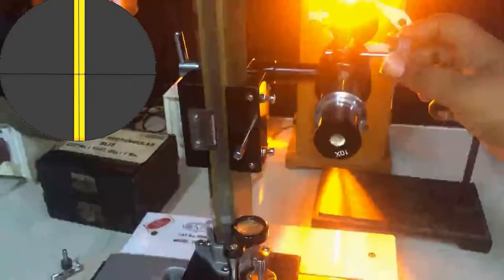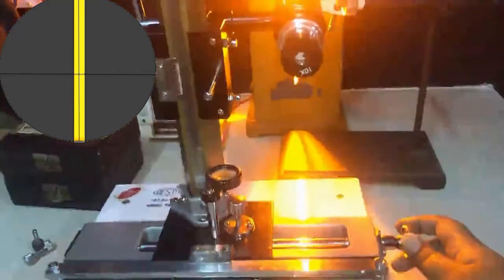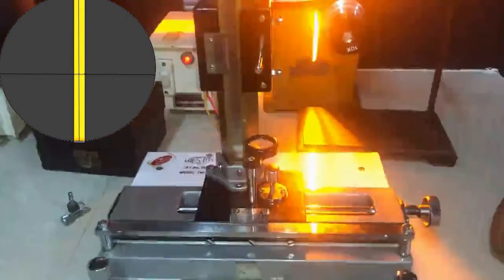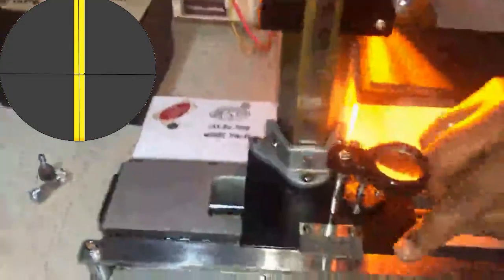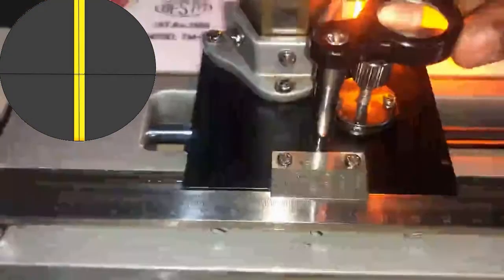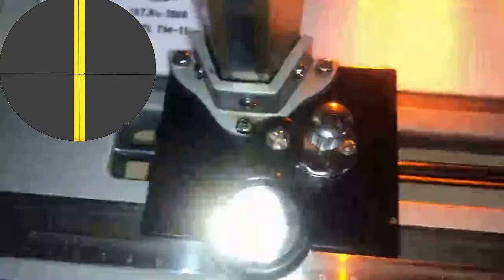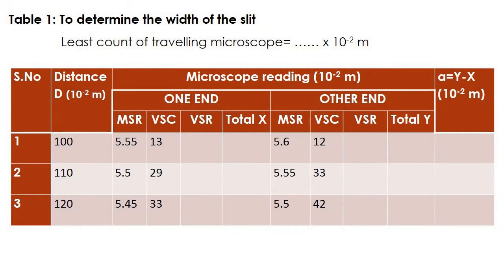Focus the traveling microscope until you get a sharp image of the slit. Place the cross wire at one end and take down the readings from the horizontal scale. Now move the cross wire to the other end and note down the readings. Repeat the experiment by varying the distance between the object and the objective lens of the telescope. The readings for three different capital D values are shown in this table.